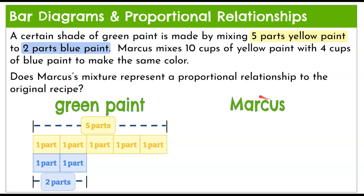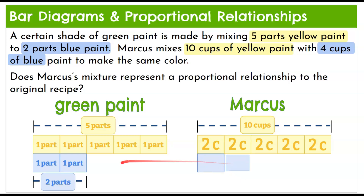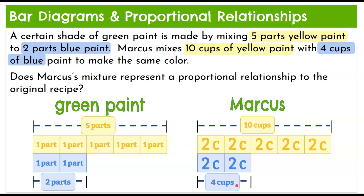Now let's look at what Marcus did — will his green paint be the same shade? Marcus used 10 cups of yellow paint, which needs to be divided equally into five parts. Here are our five boxes: 10 divided by 5 equals 2, so each part for his recipe is two cups of paint. For the blue paint, we have two parts, and each part must also be two cups — two plus two is four cups. So yes, Marcus's mixture is proportional to the original recipe, and both will produce the same shade of green.